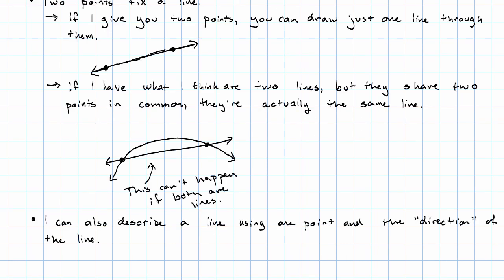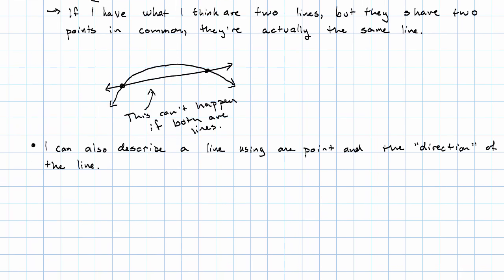I can also describe a line using one point and then the direction that the line goes. So, for example, if I give you this point and I say, I want a line that goes through this point and goes straight up and down. Well, that specifies just one line. And there it is. So we can also specify a line by saying one point to say where it is and then saying what direction it goes in.